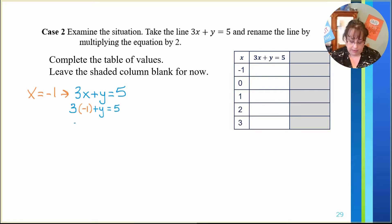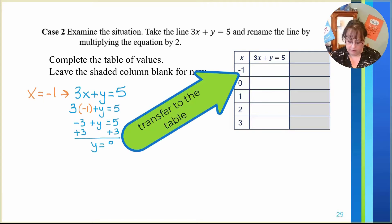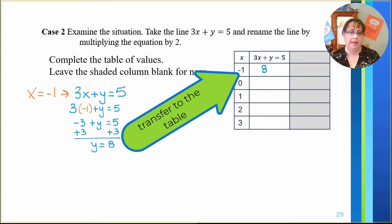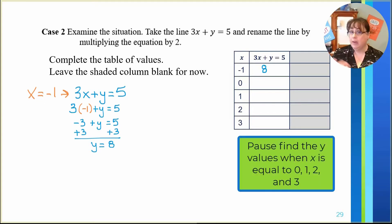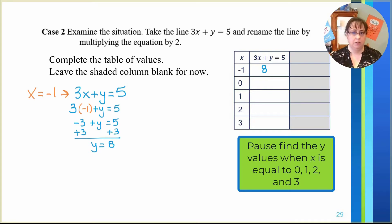So 3 times negative 1 gives us negative 3; add 3 to both sides, so y is equal to 8. We have the ordered pair negative 1, 8. Go ahead and pause this and do the rest for x equals 0, 1, 2, and 3.